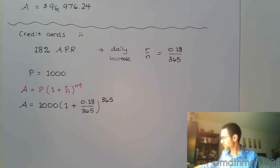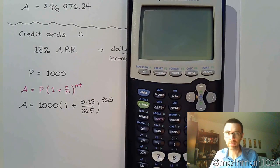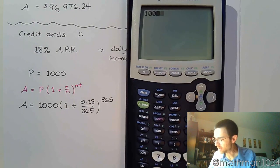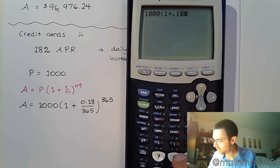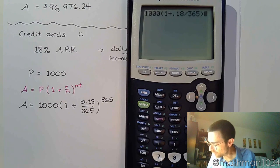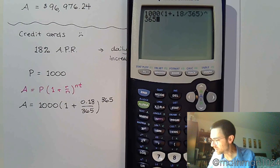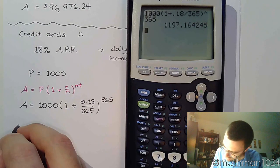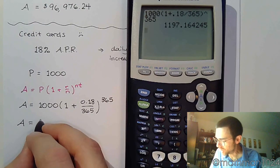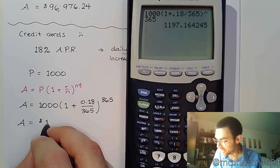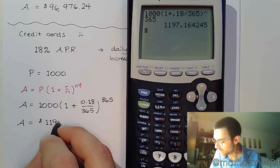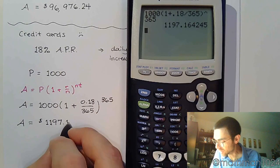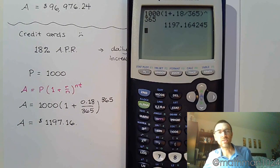So let's see what happens. I'm going to take 1,000 times 1 plus 0.18 divided by 365—small number—raised to the 365th power. That means that at the end of one year, your $1,000 in debt has now become $1,197.16. That's kind of a big increase, right? That's almost $200 more than what you owed at the beginning of the year.